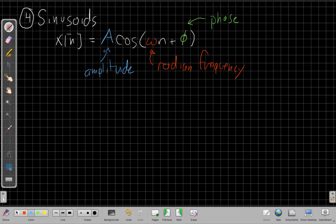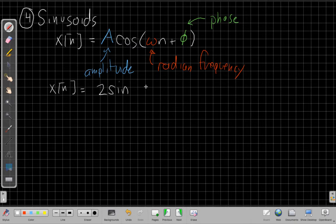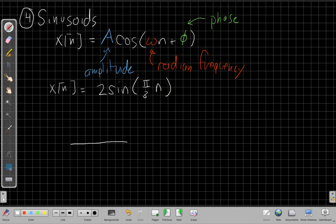So for example, if I have a very simple sinusoid, x of n, say, is equal to two times, I'll show you, we can do sine or cosine, either one is a sinusoid, of pi over 3n. If I want to graph what that signal looks like, well, when n equals 0, sine is equal to 0. So 2 times 0 is 0. This point here should be 0.